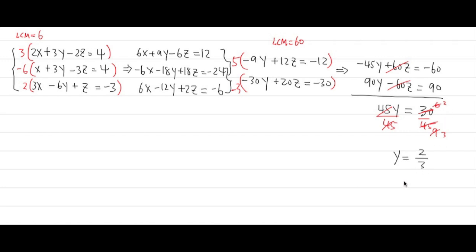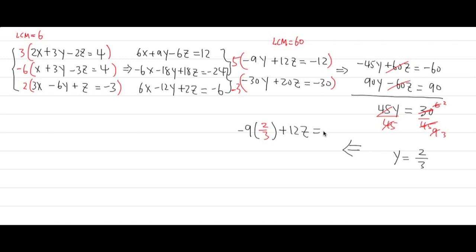We got y. Now we go backwards like a snake. Take y equals 2/3 and plug it into the first two-variable equation — negative 9 times 2/3 plus 12z equals negative 12. Working out negative 9 times 2/3: that's negative 6. So negative 6 plus 12z equals negative 12.